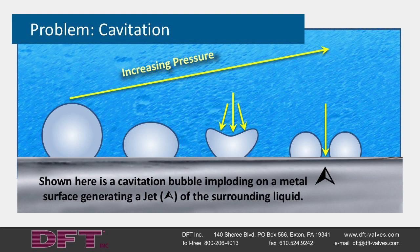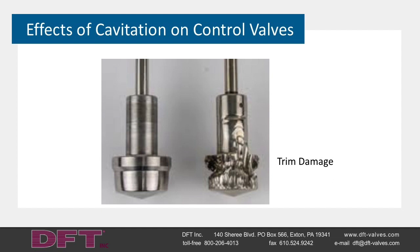Problem: cavitation. This slide depicts the deformation and implosion of vapor bubbles under increased pressure. Cavitation occurs when the increasing pressure in the flow stream recovers to the point that it is above the vapor pressure of the liquid. When the pressure recovers, the vapor bubbles implode. During this implosion, liquid jets are formed that impinge on the metal surfaces on the inside of the valve. This phenomenon has the ability to create severe damage to metal surfaces.